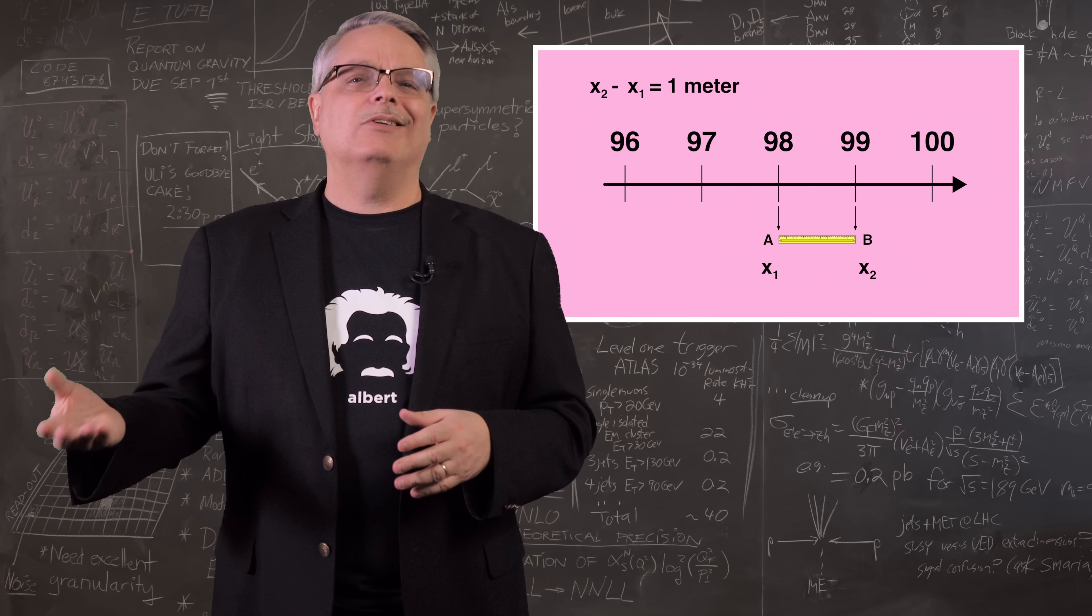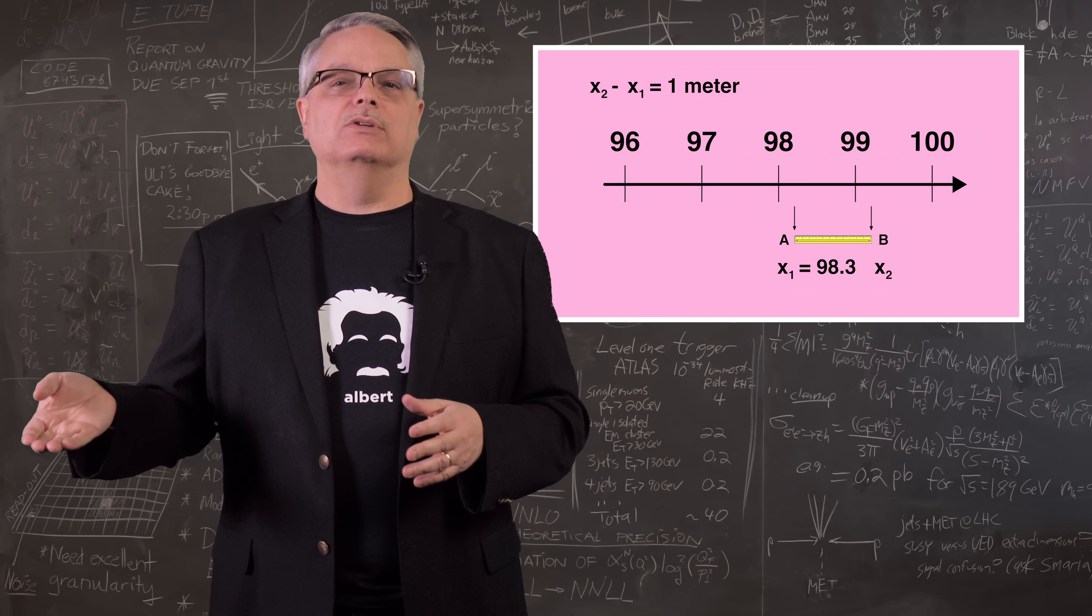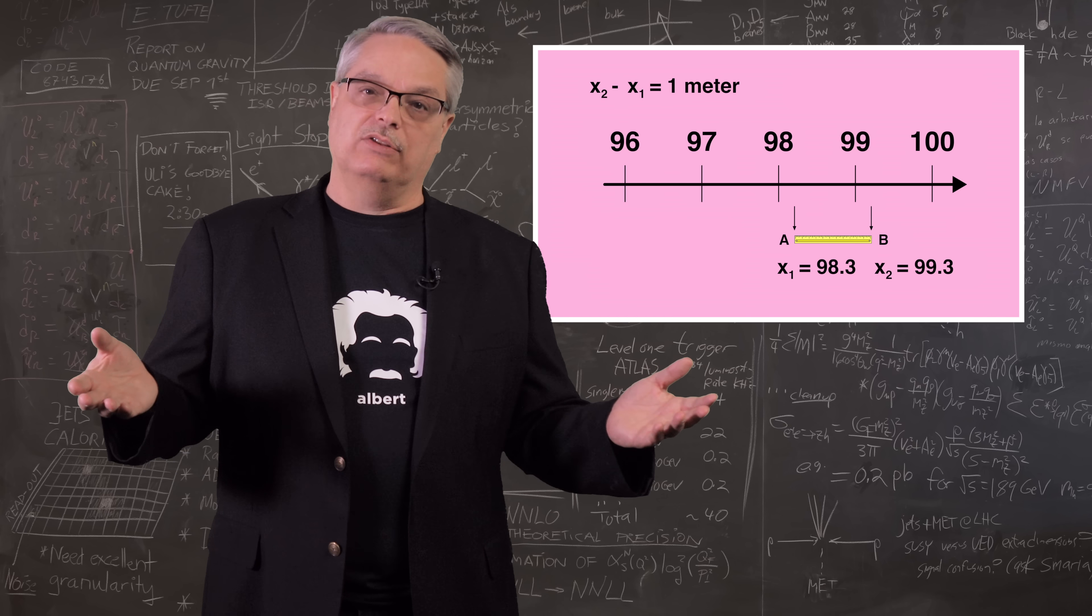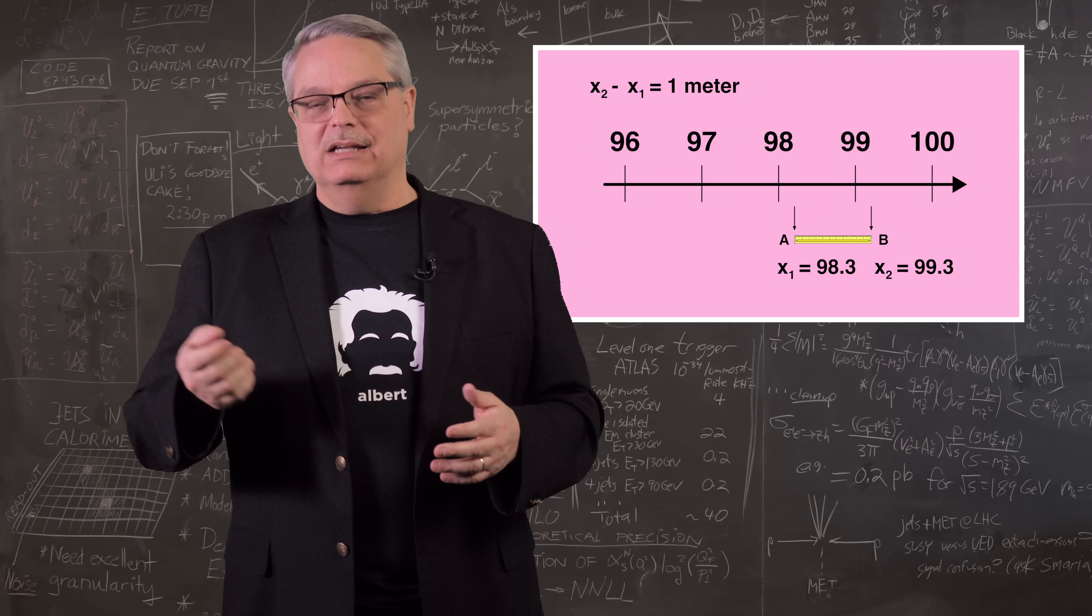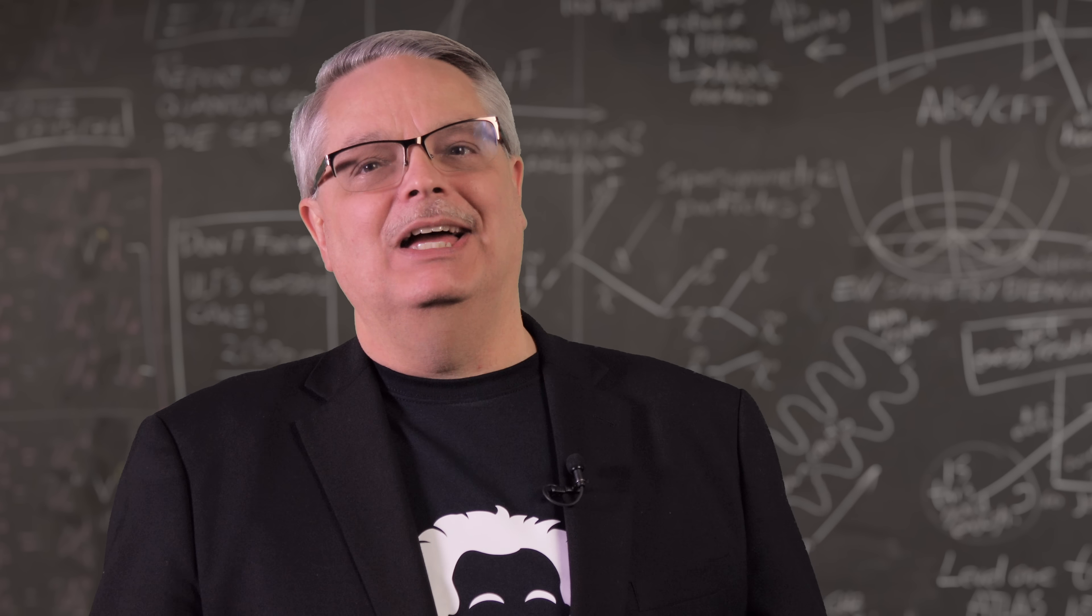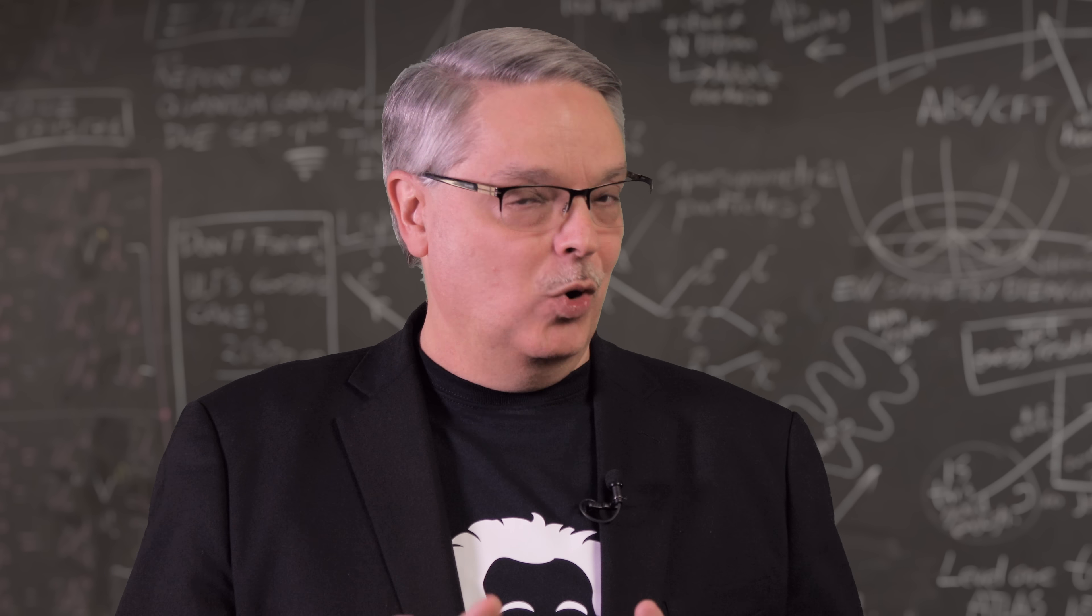Now you could have picked other locations. x1 could have been at 98.3 meters, which means that x2 would be at 99.3 meters and if you subtract those, again, you get one meter. Yeah, I know. All of that was painfully obvious. But trust me, it's about to get a little more mind-bending.